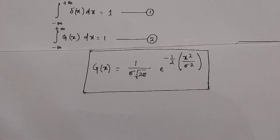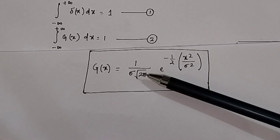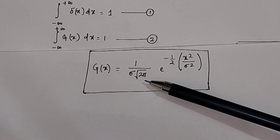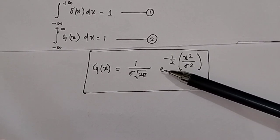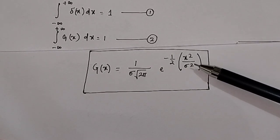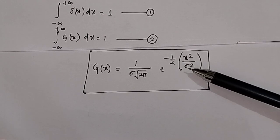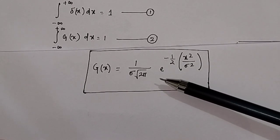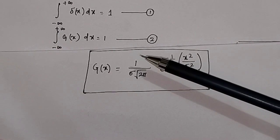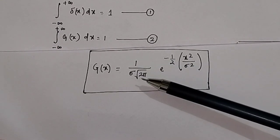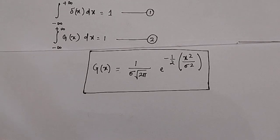We know the Gaussian function can be written as 1 divided by sigma times the square root of 2 pi, times e to the power of minus one-half x squared divided by sigma squared. Since the Gaussian function is in Fourier space, we include the term 1 divided by the square root of 2 pi.